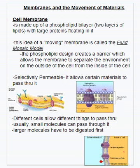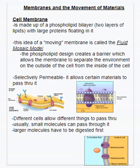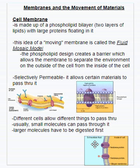Cells can manipulate what can get in and what can't get in. It's the cell membrane that controls that. It's made up of a phospholipid bilayer — two layers of lipids — with large proteins embedded in it that can shuttle materials through. This idea of a moving membrane is called the fluid mosaic model.